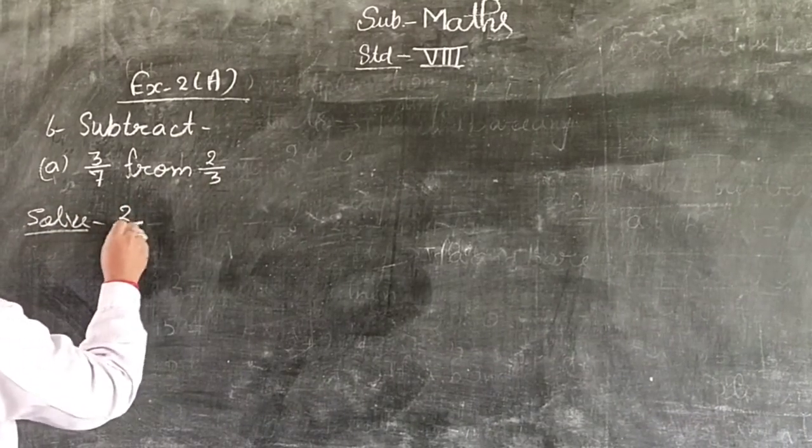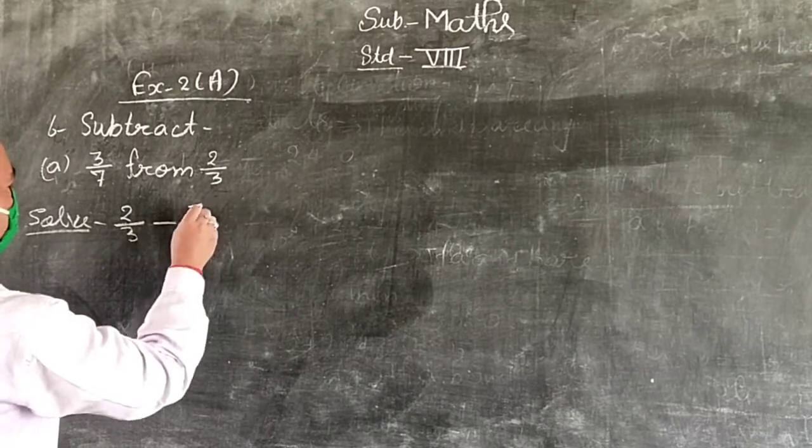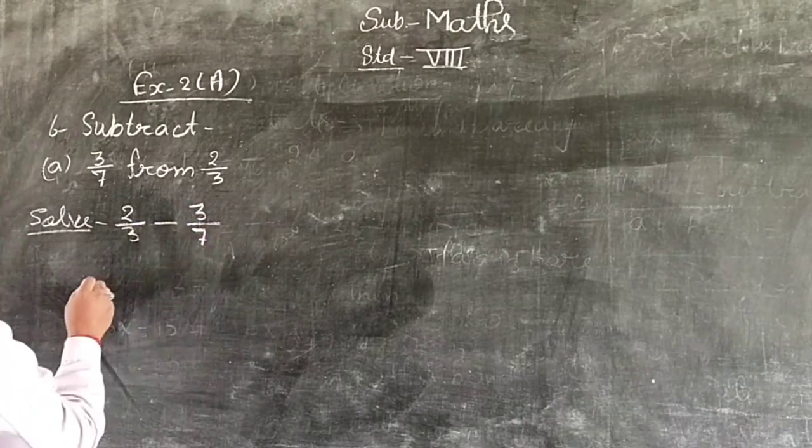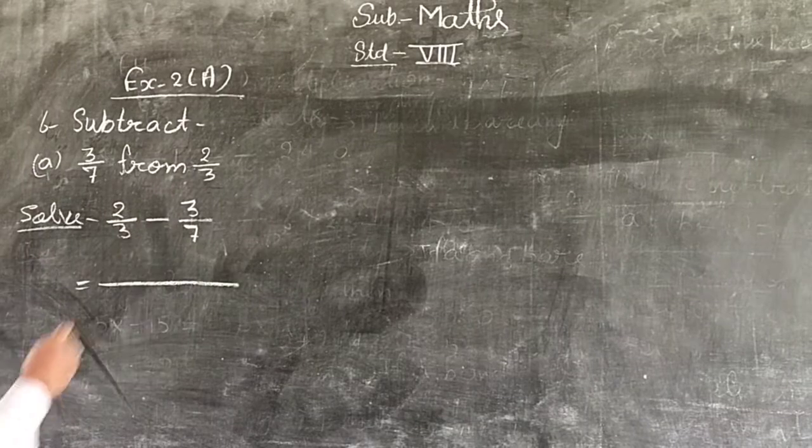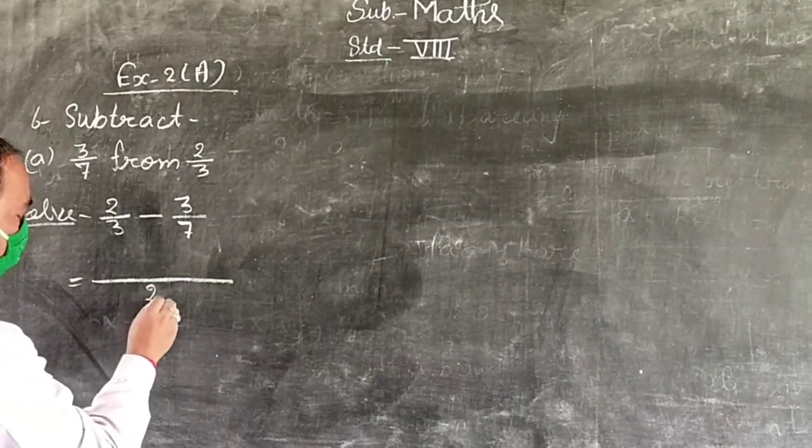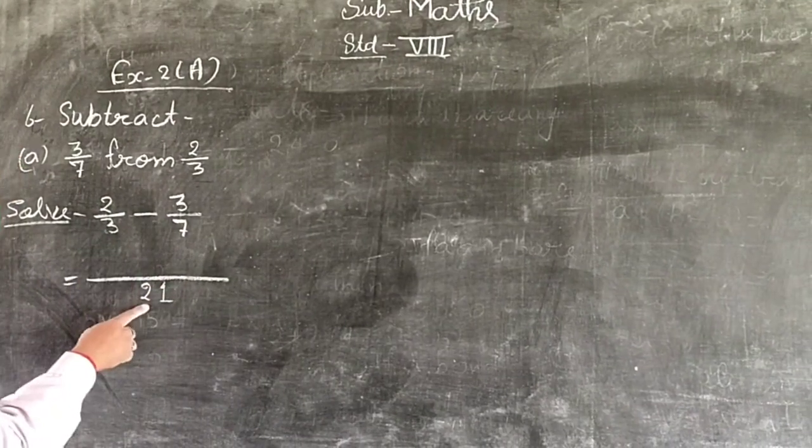We find the LCM of denominators 3 and 7. The LCM is 21. So we have 3 times 7 equals 21, and 7 times 3 equals 21.